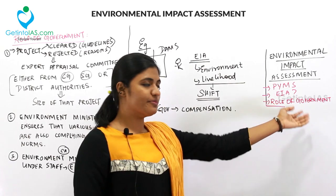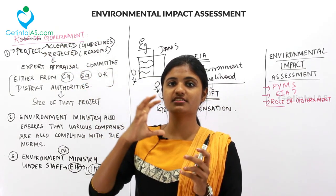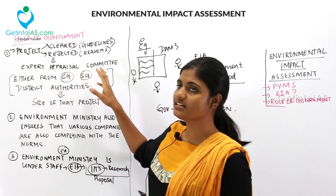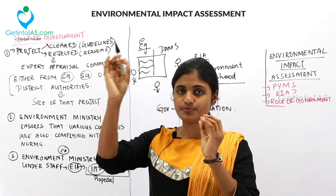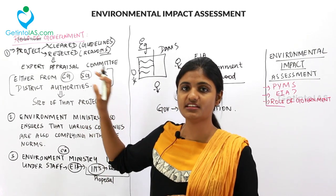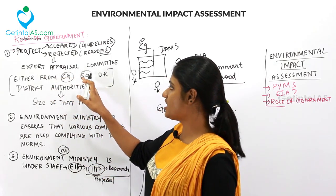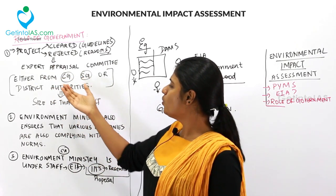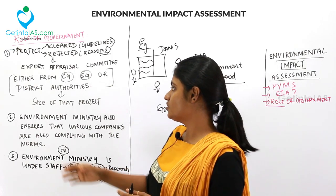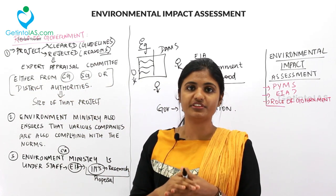What is the role of the government under the Environmental Impact Assessment? When a project is submitted under EIA, it is either cleared or rejected by the Expert Appraisal Committee. This committee either clears the project if all guidelines are satisfied or rejects it if not, and gives reasons why. This Expert Appraisal Committee is from the central government, state government, or district authorities, depending on the size of the project.